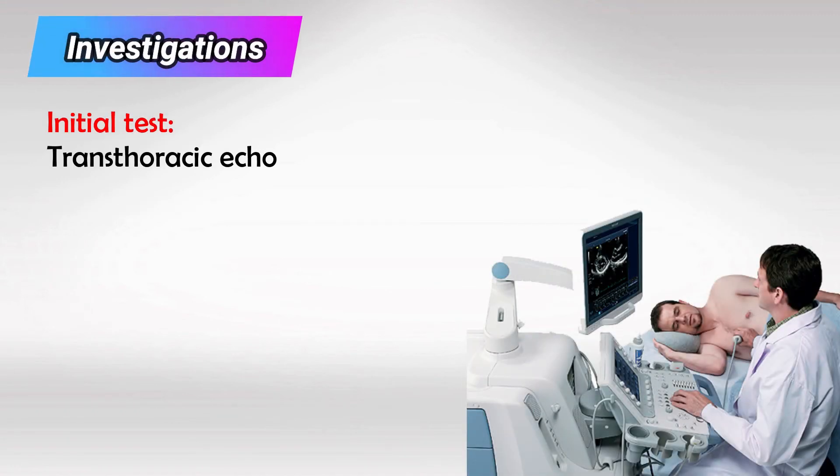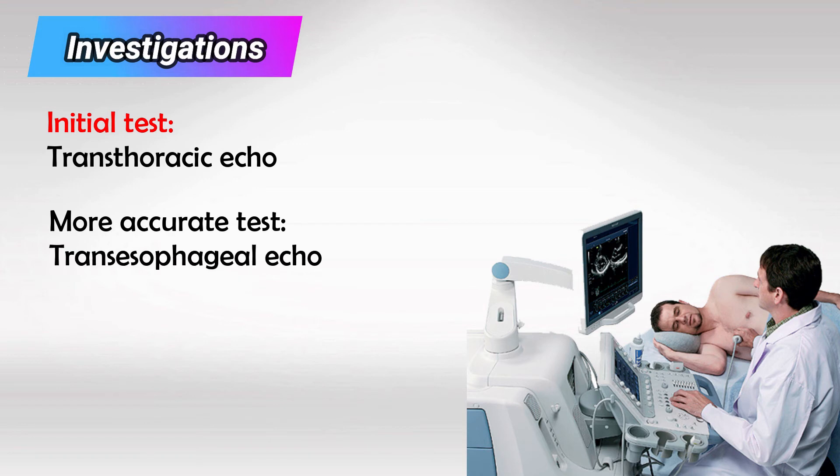As with all cardiac murmurs, transthoracic echo is the initial test, transesophageal echo is better, and catheterization is the most accurate test.